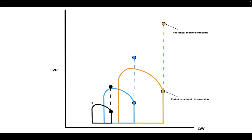If we connect those dots, we get a line that describes the relationship between pressure and volume — specifically, the relationship between the theoretical maximal pressure and the volume.